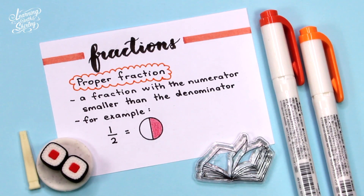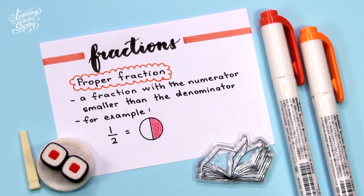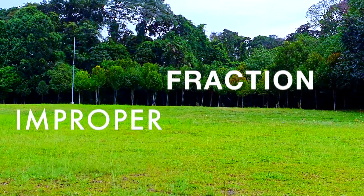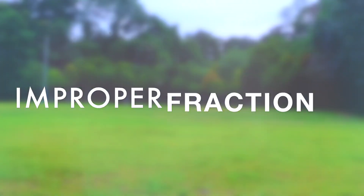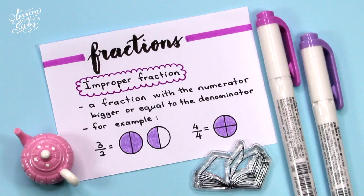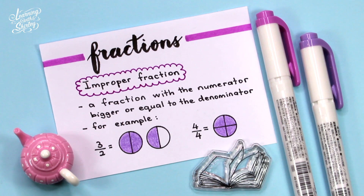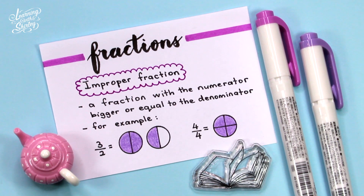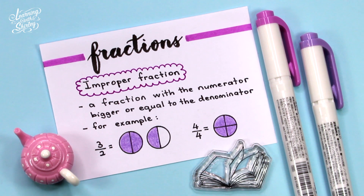What is a proper fraction? A proper fraction is a fraction with a numerator smaller than the denominator. For example, 1 over 2 is a proper fraction. What is an improper fraction? An improper fraction is a fraction with a numerator bigger or equal to the denominator. For example, 3 over 2 and 4 over 4 are improper fractions.